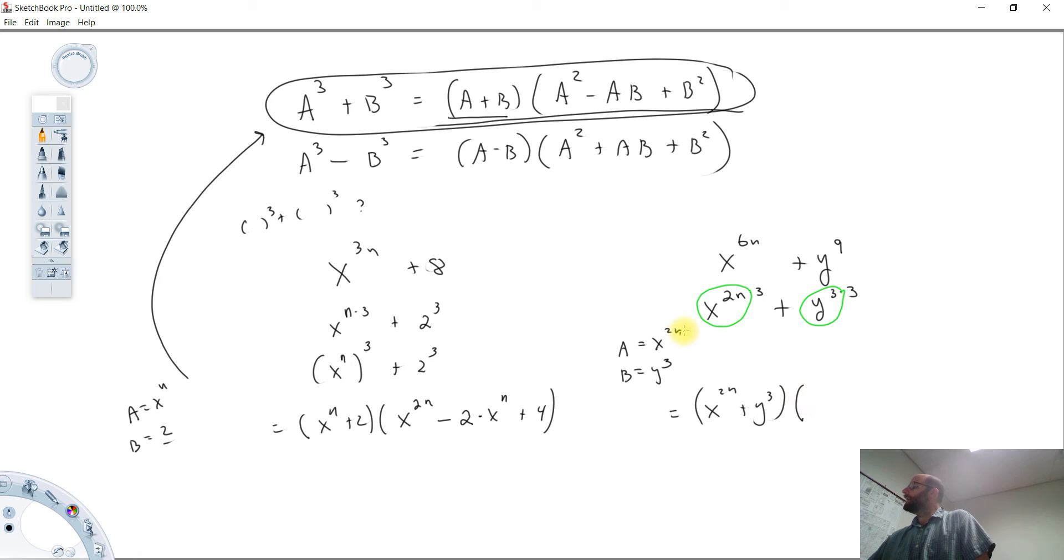a squared. Now if we take this and we square it, it's going to be x to the 4n. Because remember, when you raise a power to a power, you multiply exponents.